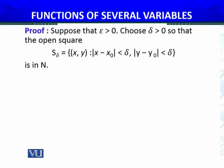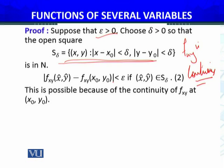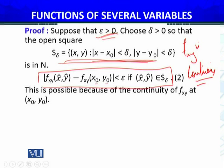Let's prove this. The proof is quite tricky. Suppose that for ε > 0, we can choose δ > 0 so that the open square is in the neighborhood of (x₀, y₀). We can define this neighborhood because f_xy is continuous. By the definition of continuity, |f_xy(x̂, ŷ) − f_xy(x₀, y₀)| < ε whenever (x̂, ŷ) belongs to that neighborhood.